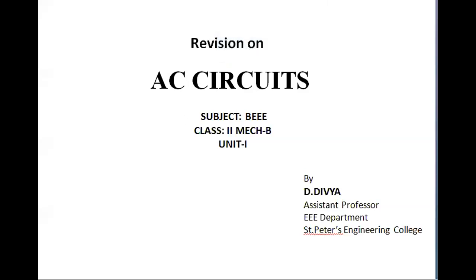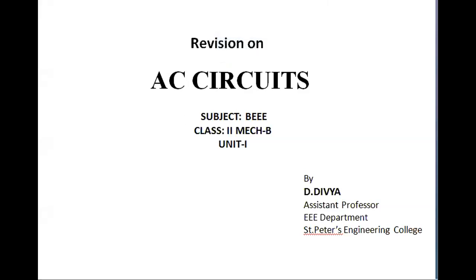First of all, what is meant by AC? AC is nothing but an alternating quantity. This alternating quantity can be represented as a waveform — it has to complete a full cycle within a particular time, and that time is called the time period. Let us discuss the terms individually.